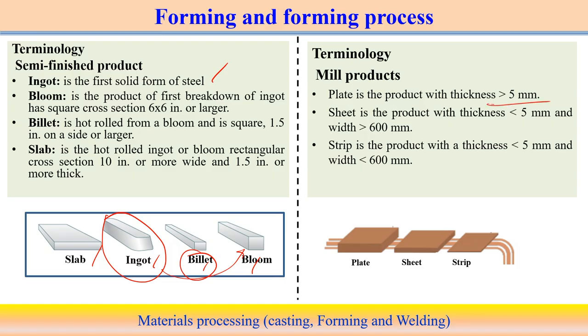There are also mill products: plate (thickness greater than 5mm), sheet (thickness between 5mm and 600mm), and strip (thickness less than 5mm and width less than 600mm) — all produced through metal forming operations. These different shapes are finally used for different components. This is how we obtain different deformed or metal-formed components, which are then used in further manufacturing processes to get an end product.